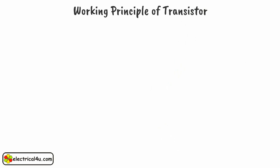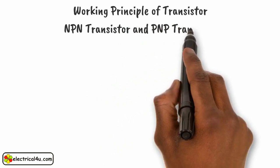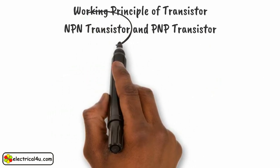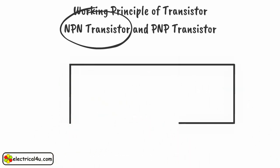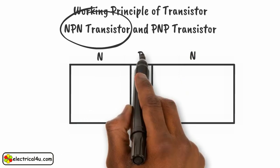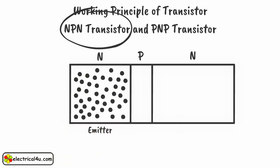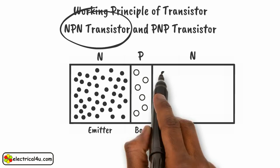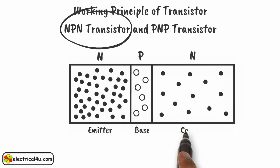Now we will construct a semiconductor transistor. There are two types of semiconductor transistor: NPN transistor and PNP transistor. For the sake of understanding, we will draw an NPN transistor. There are two N-type regions and one P-type region in between them. One N-type region is highly doped and moderate in size — we call this region the emitter. The middle P-type region is lightly doped and very narrow — we call this region the base. The other N-type region is moderately doped and largest in size — we call this region the collector.